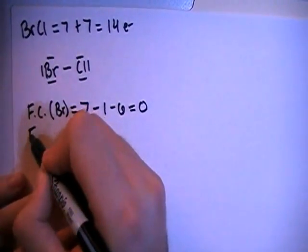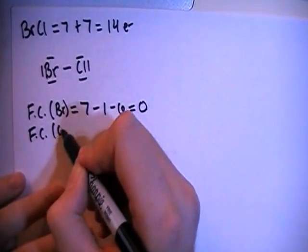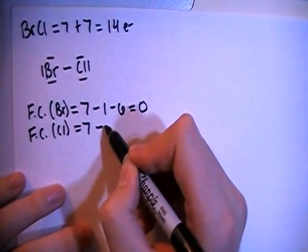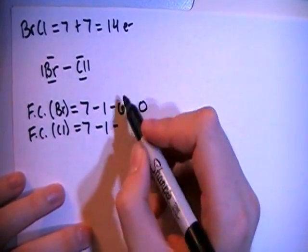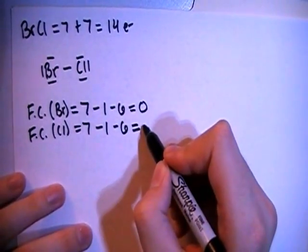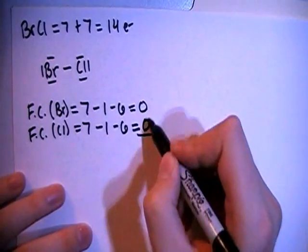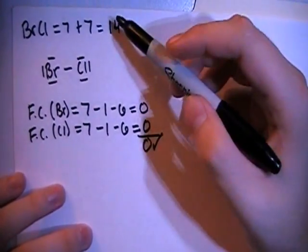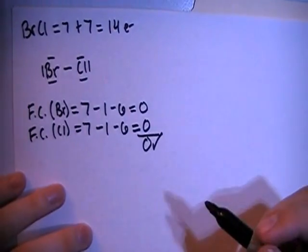And then the formal charge on the chlorine is going to be the 7 valence electrons brought in minus the 1 single bond minus the 2, 4, 6 non-bonding electrons as well, which also gives us a formal charge of 0. Add those up, overall formal charge of 0, which is what we need because this is not a charged particle.